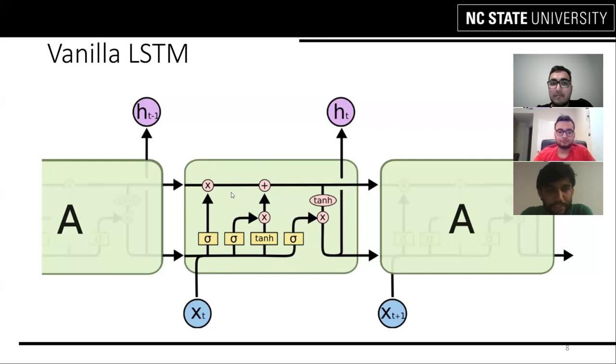This particular section is the input gate. It adds or updates the new information into the current state with the help of sigmoid function and the tanh function which creates the new vector to be added in the cell state. At this point we will get the new cell state value from the previous old state.